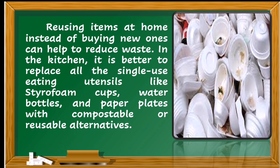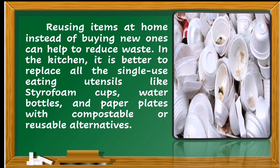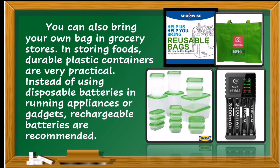Reusing items at home instead of buying new ones can help reduce waste. In the kitchen, it is better to replace single-use eating utensils like styrofoam cups, water bottles, and paper plates with compostable or reusable alternatives. You can also bring your own bag to grocery stores. For storing foods, durable plastic containers are very practical — you can use Tupperwares or any brand of reusable plastics. Instead of using disposable batteries in your appliances or gadgets, you may use rechargeable batteries.